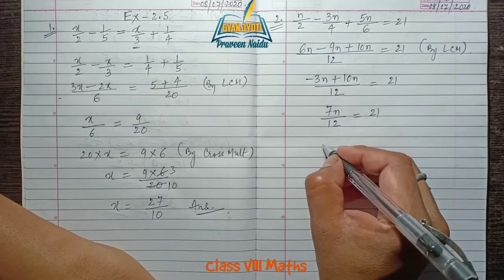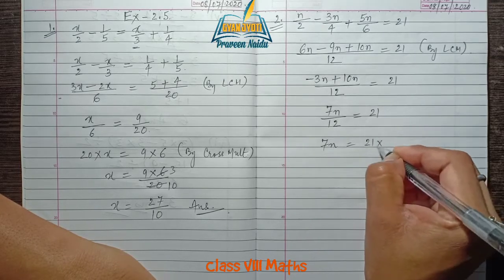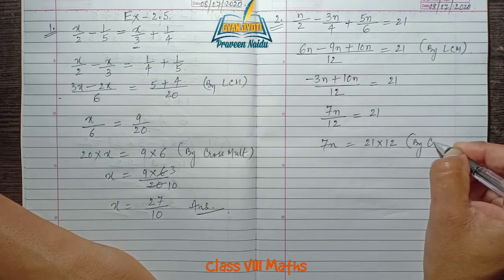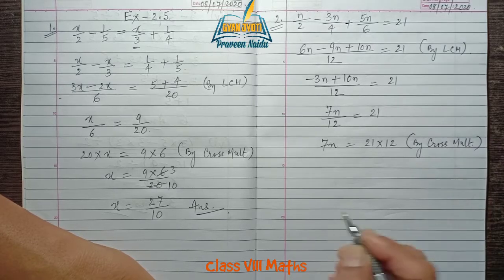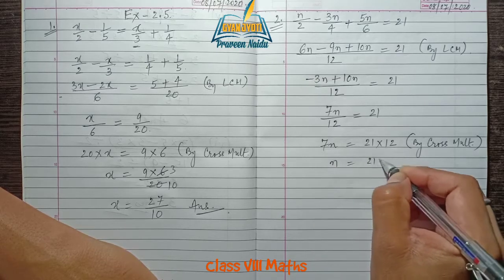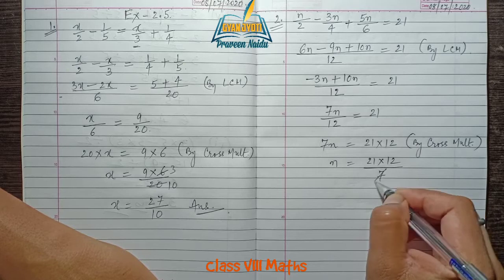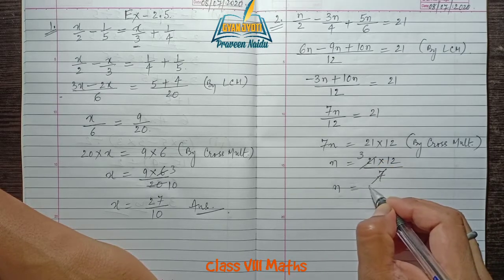By transposing 7, we get (21 × 12)/7. By cancelling, n = 36. That is the answer.